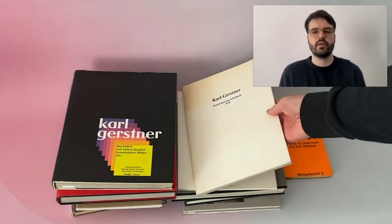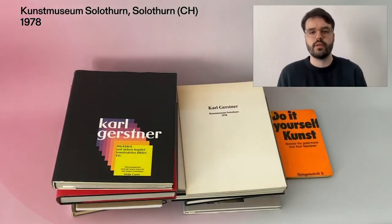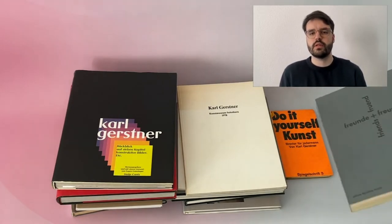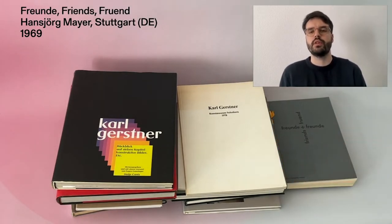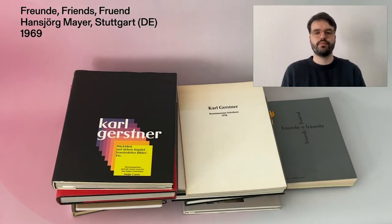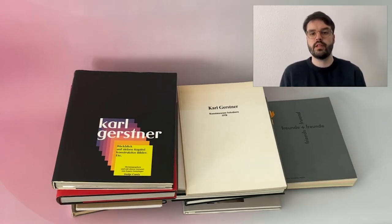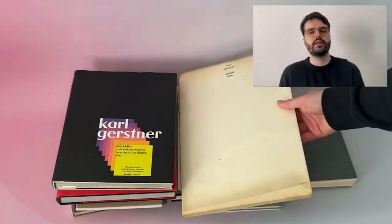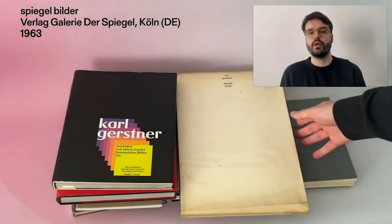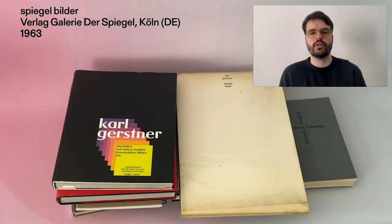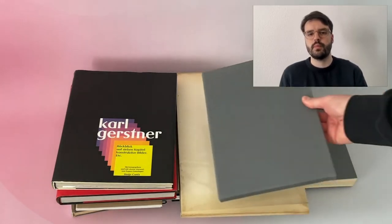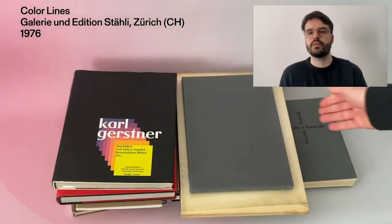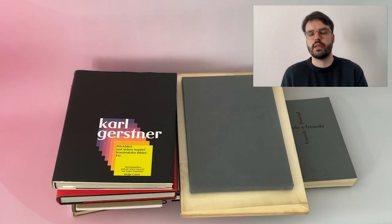More extensive biographies appear on the occasion of his first retrospective in 1978, for example, or with very personal comments on the occasion of the exhibition Freunde, Frünt (Friends). There are publications that can be seen as artistic works themselves — Spiegelbilder (mirror images), for example, a catalog with original prints, as well as a numbered and signed edition of color lines, or the book object Colour Sounds.